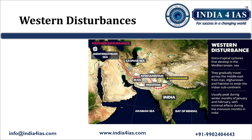Western Disturbances are Extratropical Storms that originate in the Caspian Sea and Mediterranean Sea. They are Extratropical Cyclones, not tropical cyclones. They travel from West to East, moving towards the Indian subcontinent under the influence of high-altitude westerly jet streams.